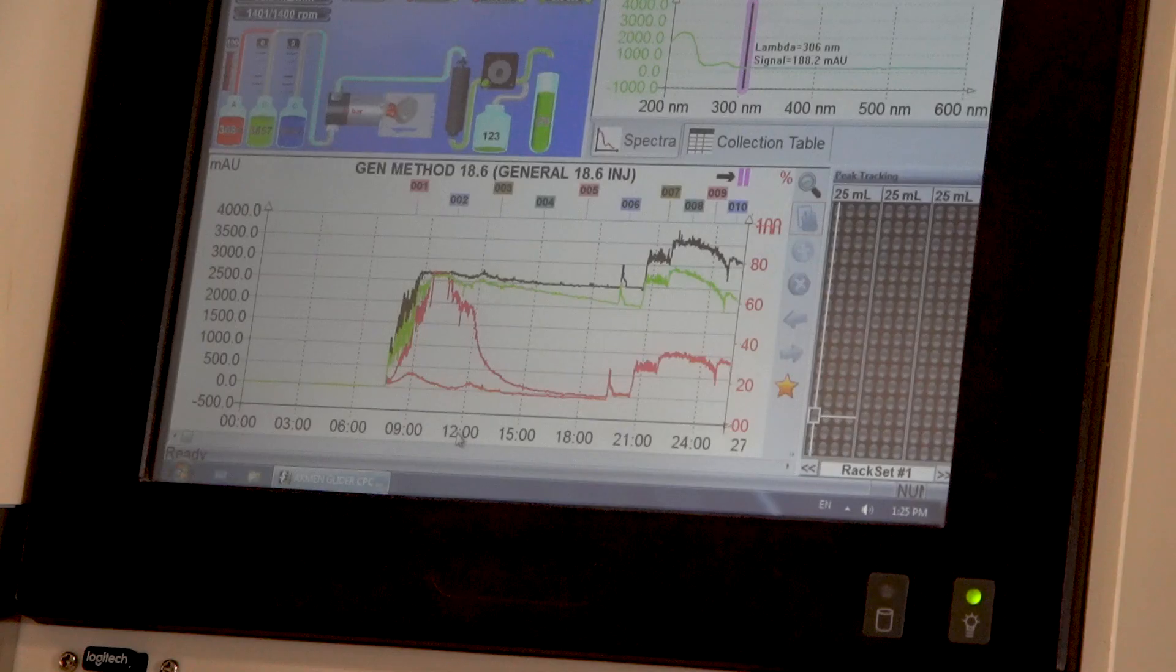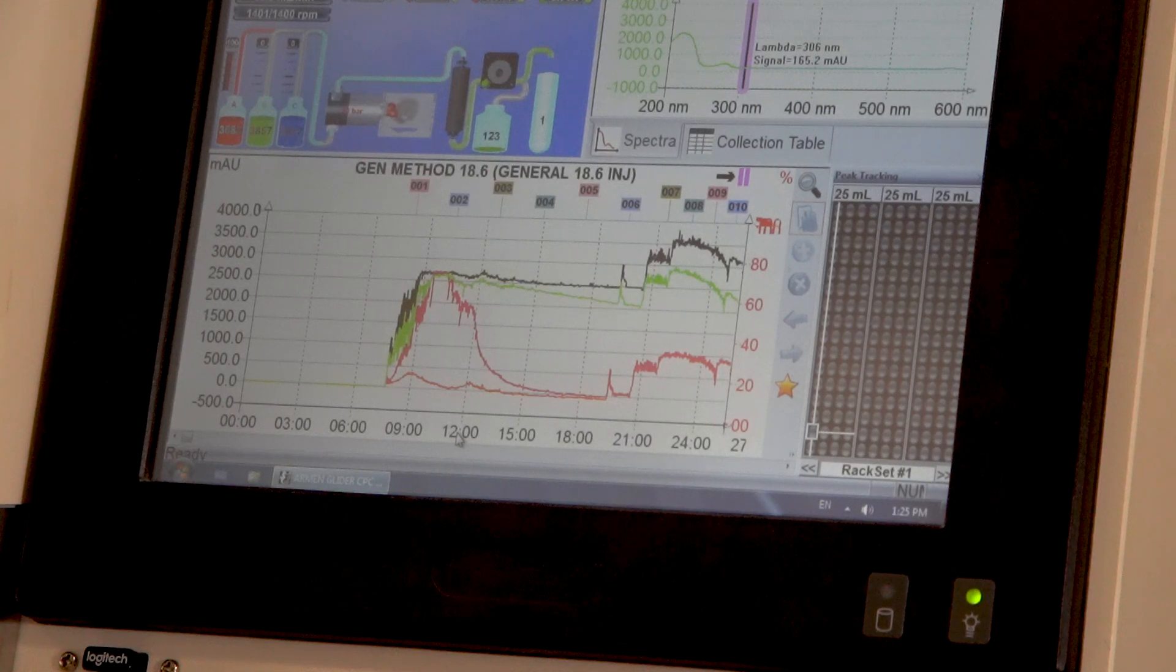There are not a lot of manufacturers currently making large-scale centrifugal partition chromatographs. As opposed to Chromaton, we manufacture a 5-liter unit which is capable of processing 150 grams of CBD distillate in a 26-minute run.